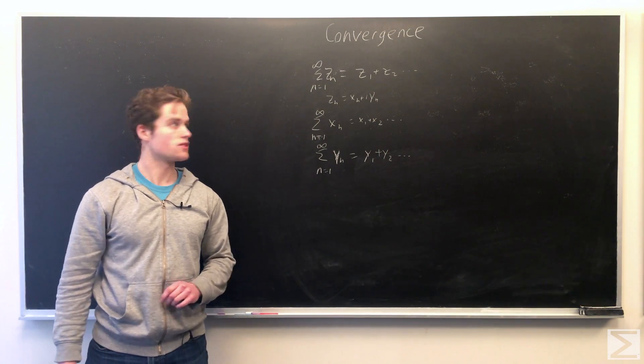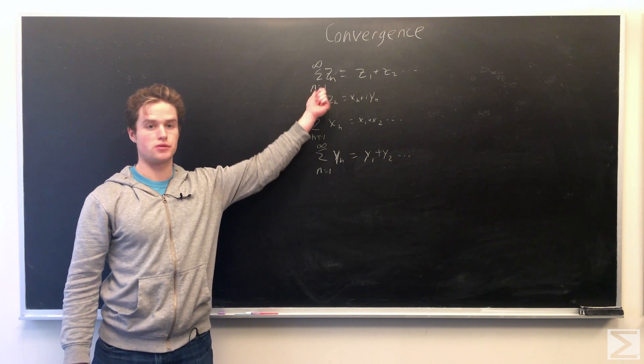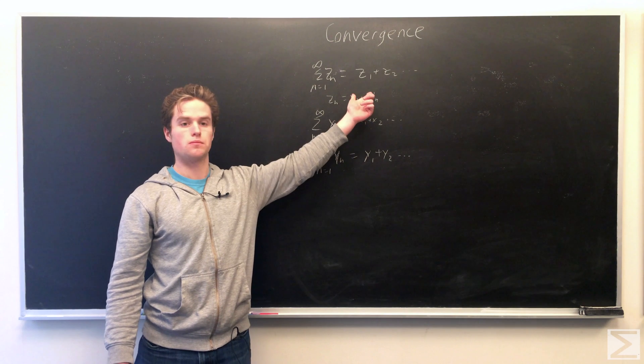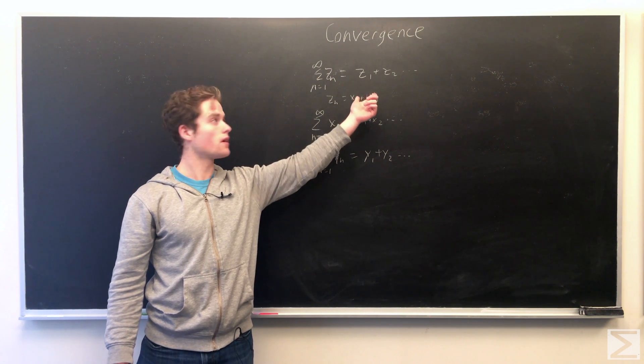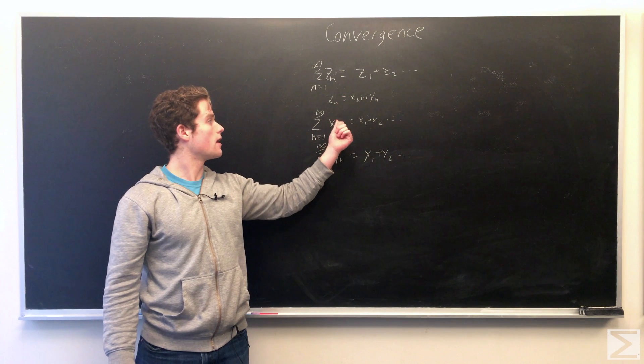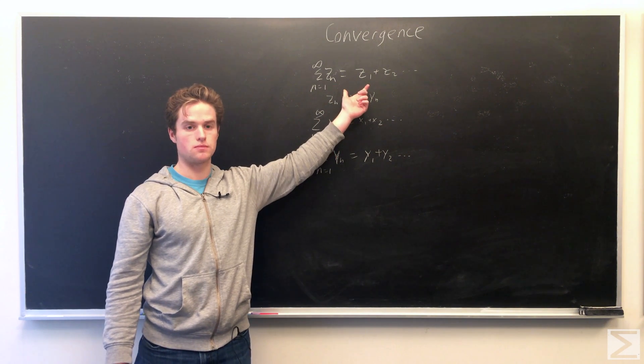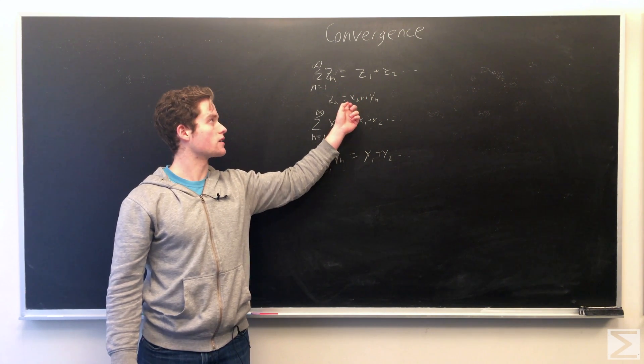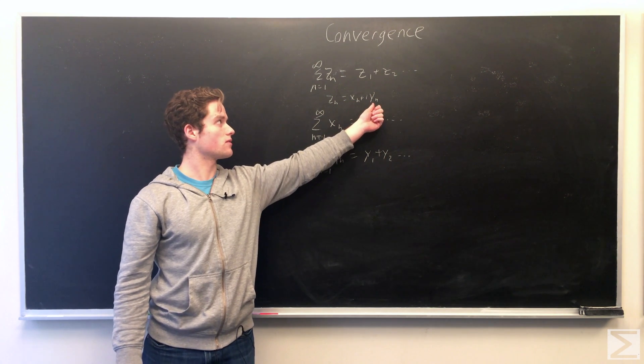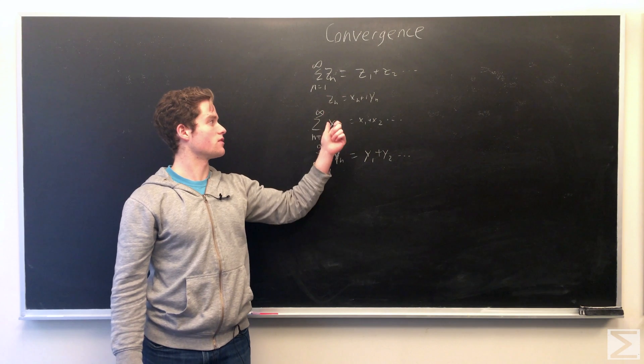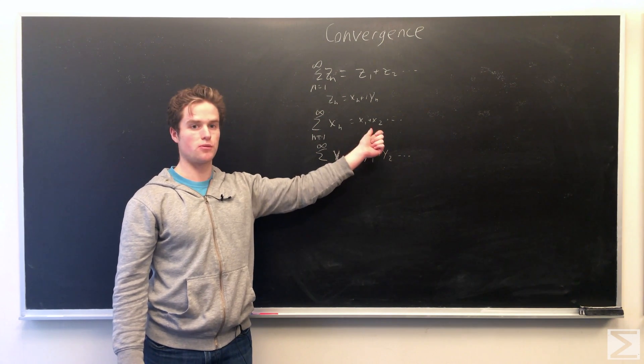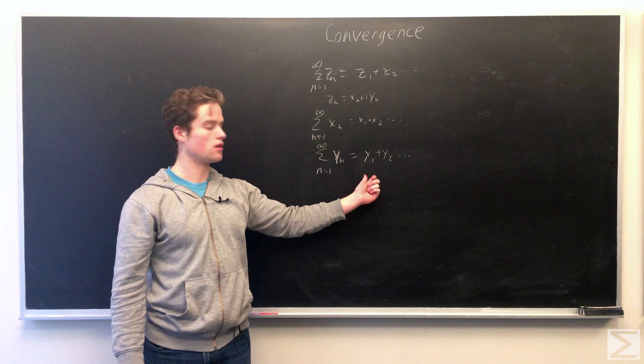So given a complex series, sum from n equals 1 to infinity, z1 plus z2 and so on, which looks very similar to a series of real numbers and can be treated similarly. We're going to say this converges if and only if, expanding zn as real part plus imaginary part, the two separate series of the sum of the real parts and the sum of the imaginary parts converge.